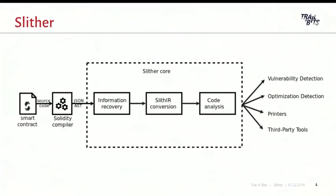As a quick overview of what Slither does: it's a framework to perform static analysis. It takes a smart contract and the AST representation generated by the compiler, and performs various analyses on top of this AST. It will first recover a lot of information — what are the contracts, what are the functions, what are the control flow graphs of each function. It will convert the Solidity expression to its own intermediate representation, called SlithIR, and finally perform code analysis directly on top of the IR, such as data dependency or detection of what functions are protected.